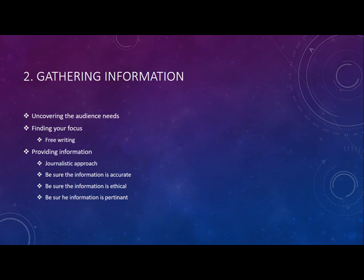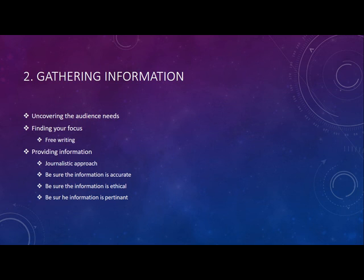The last thing is providing the required information. In any communication you are providing certain information, but before providing it, you should be able to answer a few questions. The information should be complete — it should answer: who, what, when, where, why, and how. This is also known as the journalistic approach. To check whether your message is of good quality, verify whether it answers all of these questions. If it does, you are good to go — your message is complete.